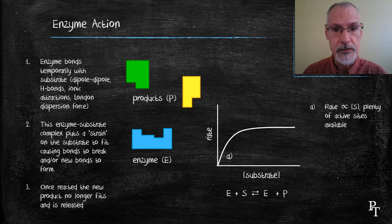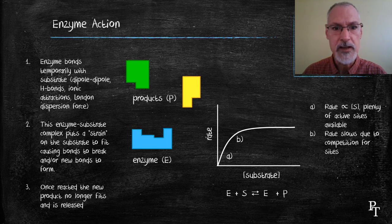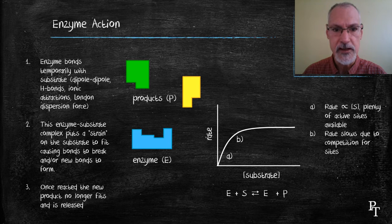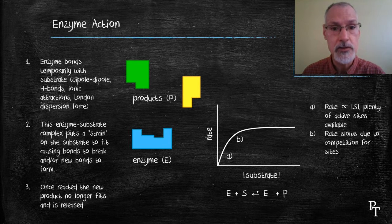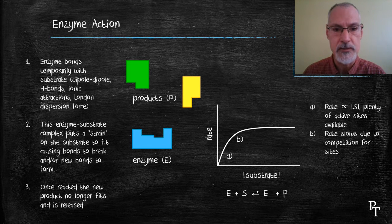As the substrate concentration builds, there begins competition for that site because there's only a limited amount of enzyme sites. As a result, the reaction tends to slow down even though we are increasing the concentration of our substrate.